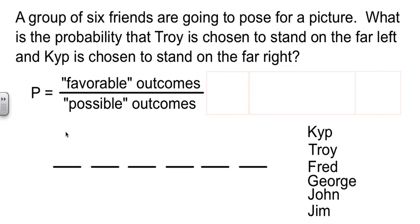Let's consider what could happen first. What could happen, how many people could be in this spot? Possibly, not specific to the problem, but possibilities. Possibilities are there are 6 people that could be here. Now, I've picked somebody. How many people can be here? There's 5, 4, 3, 2, and then there's one person left. So, the possibilities are 6 times 5 times 4 times 3 times 2 times 1, which is 6 factorial.